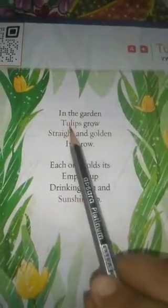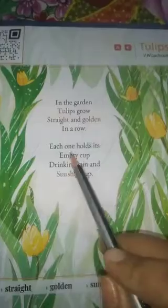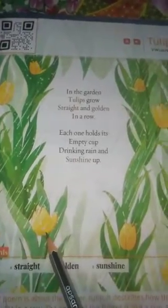It looks as if the flower is drinking the sunshine and the rain from the cup. As you can see, it is raining also in this picture. So this flower is drinking the sunshine and the rain from the cup. Again I am repeating it: In the garden, tulips grow straight and golden in a row. Each one holds its empty cup, drinking rain and sunshine up. The shape of the flower is like a cup, and it looks like the flower is drinking rain and sunshine.